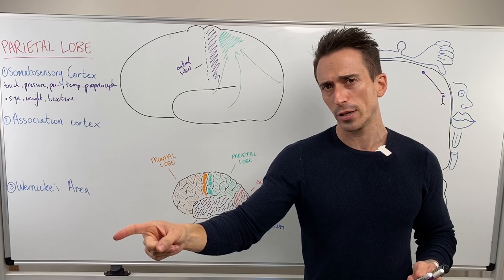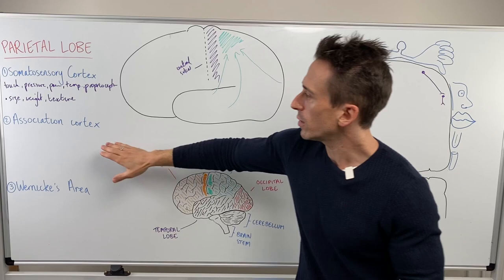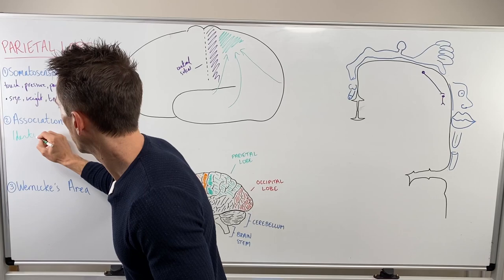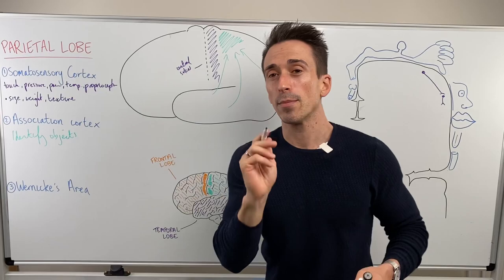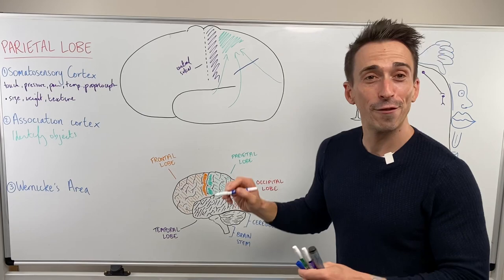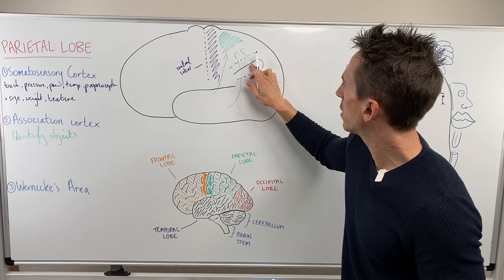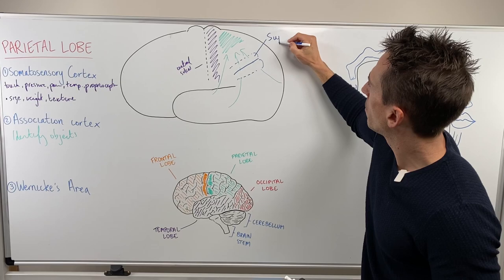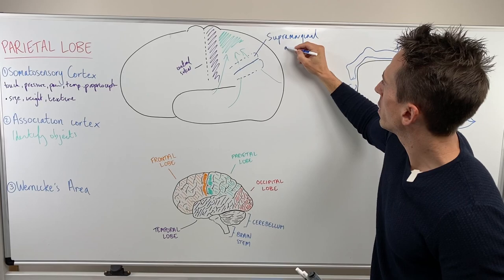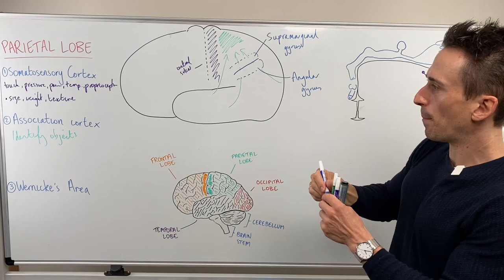If you have damage to that area, it's hard to identify what things are — whether that is a shoe, a lamp, or a coin — but you can still understand the various aspects of that object through the primary somatosensory cortex. Now, there are some other areas of the association cortex you need to be aware of. There's another sulcus and gyri here. This one is called the supramarginal gyrus, and this one is called the angular gyrus. Both are part of the association cortex.